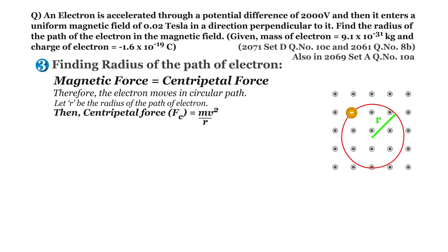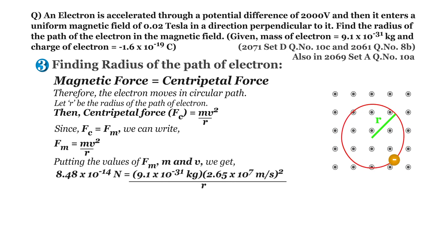Since Fc equals Fm, we can write Fm equals m v squared divided by R. Now putting the value of Fm, m and v, we can write 8.48 into 10 to the power minus 14 newton equals 9.1 into 10 to the power minus 31 kg times 2.65 into 10 to the power 7 meter per second squared divided by R.